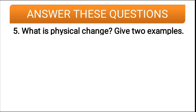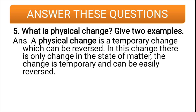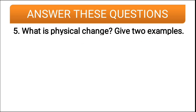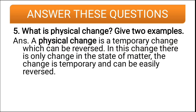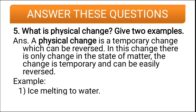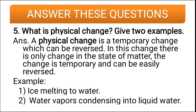Fifth question: what is a physical change? Give two examples. A physical change is a temporary change which can be reversed. In this change, there is only a change in state of matter; the change is temporary and can be easily reversed. Examples: ice melting to water, and water vapor condensing into liquid water.